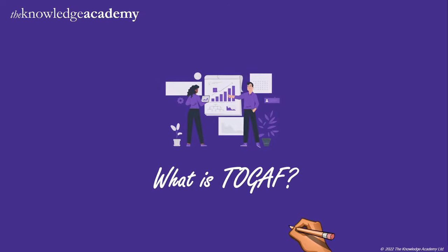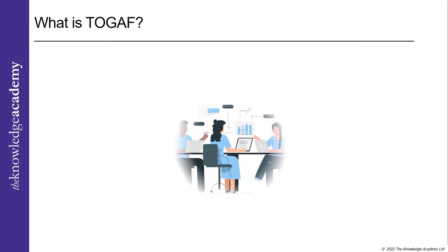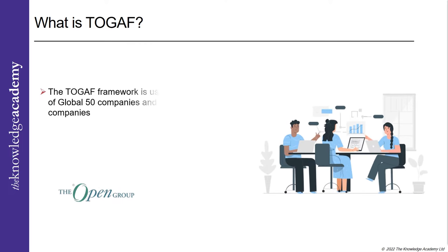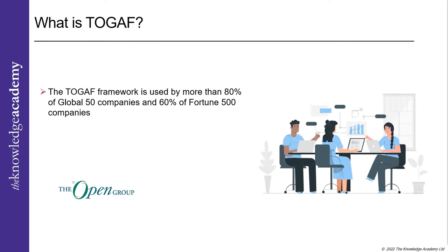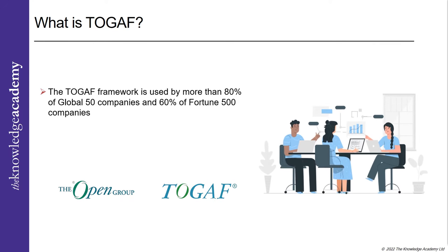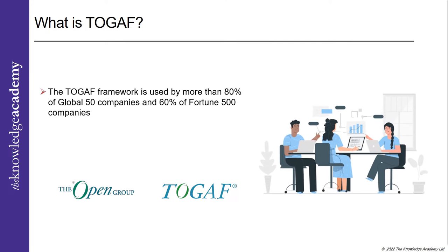Topic 1: What is TOGAF? The Open Group Architecture Framework, or TOGAF, is an Enterprise Architecture standard that offers a high-level framework for managing enterprise software development. The Open Group first introduced TOGAF in 1995. The TOGAF framework is used by more than 80% of the Global 50 companies and 60% of the Fortune 500 companies.